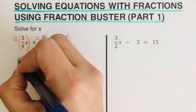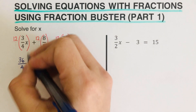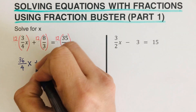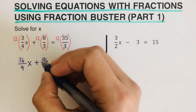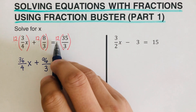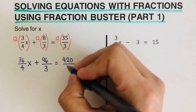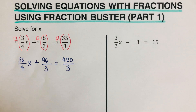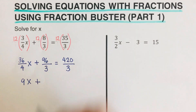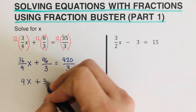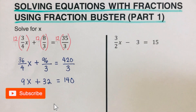So 12 times 3 is 36 over 1 times 4 is 4, giving us 36/4 times x. Then 12 times 8 is 96 over 1 times 3 is 3. That equals 12 times 35 which is 420 over 1 times 3 is 3. Simplifying: 36 divided by 4 is 9, so we have 9x; 96 divided by 3 is 32; and 420 divided by 3 is 140.